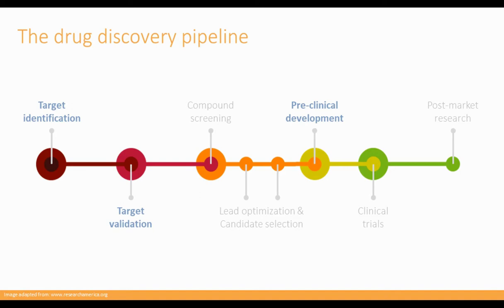Once we have a molecule in hand, we move on to preclinical development, which encompasses a wide range of activities mostly geared around understanding the safety of the molecule, the dosing strategy, and how the molecule is interacting with the protein — the mechanism of action. This usually involves a lot of in vitro and in vivo studies. Once the molecule has passed safety standards and shows potential efficacy, we can finally move on to human clinical trials. If it passes, it becomes a successful medicine, and there will often be a stage of post-market research looking at patient populations, responses, and other potential disease applications.